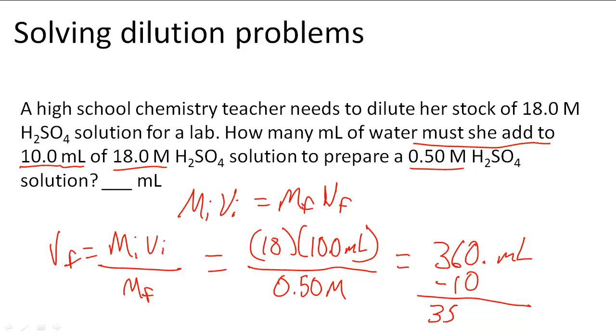So that's going to be 350 milliliters that she has to add so that she can get 360 milliliters and get the appropriate diluted concentration. So 350 is the answer to this problem.